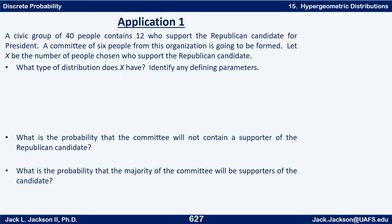We have a fixed finite number of people in the population, so we have capital N, population size of 40. Within that we have capital M equals 12 successes — success here is supporting the Republican candidate. Remember, success is not necessarily good or bad; it's just what we're counting. A committee of six people is a sample of size six, so little n is six. X counts the number of successes, and we're doing this without replacement. So this is exactly the setup for a hypergeometric distribution.